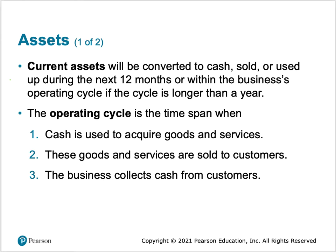Current assets are liquid — they will be converted to cash, sold, or used in the next 12 months, or within the business's operating cycle if that cycle is longer than a year. For example, if the operating cycle is 13 or 14 months, an asset converted within that timeframe is still current. The operating cycle is the time it takes from spending cash to acquire goods or services, to selling those goods and services, to collecting cash from the customer.